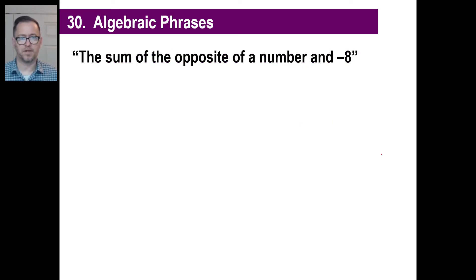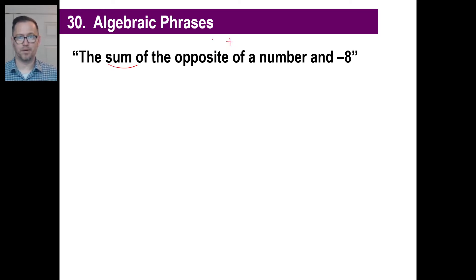How about 'the sum of the opposite of a number and negative eight'? Break this down into pieces. We have a sum, so we'll be adding something. We have the opposite of a number, which is negative X. And we're going to add negative eight to it. So you can say negative X plus negative 8.